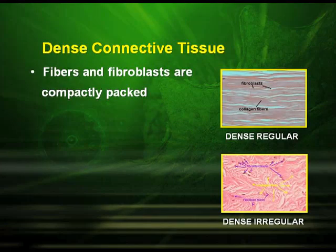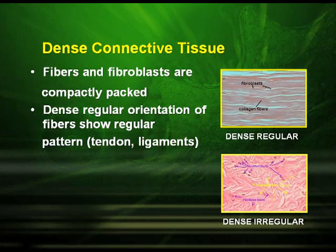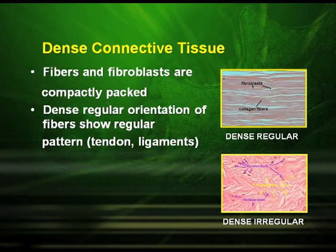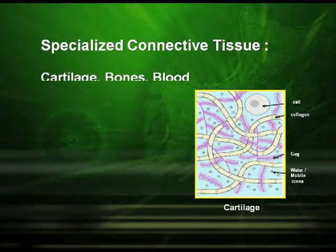In dense connective tissue, the fibers and fibroblasts are compactly packed. Dense regular orientation of fibers shows a regular pattern, as seen in tendons and ligaments. Dense irregular orientation shows an irregular pattern. The specialized connective tissue includes cartilage, bones, and blood.